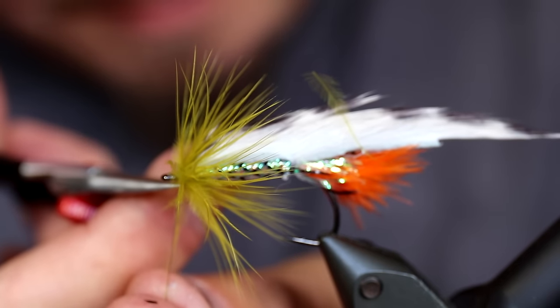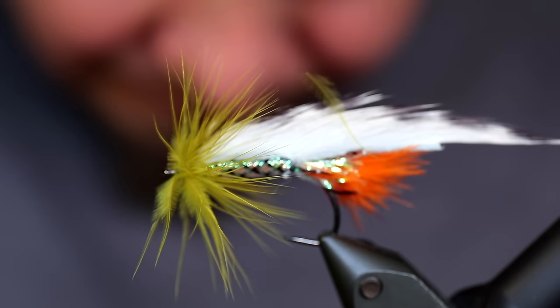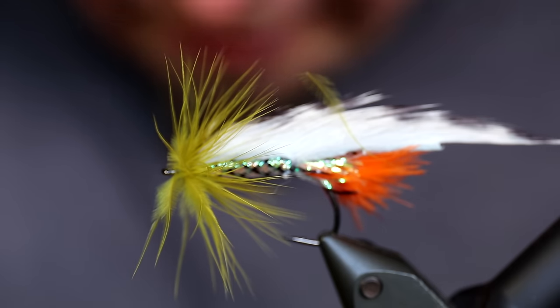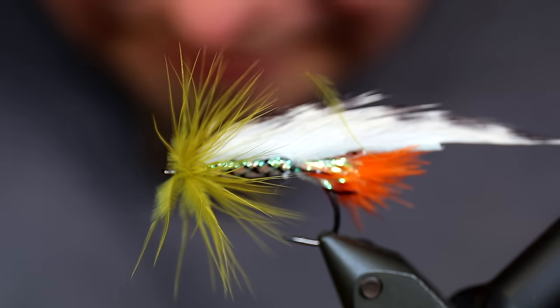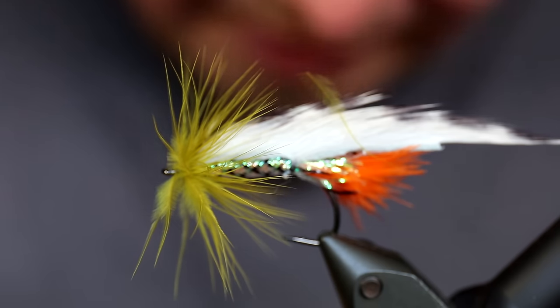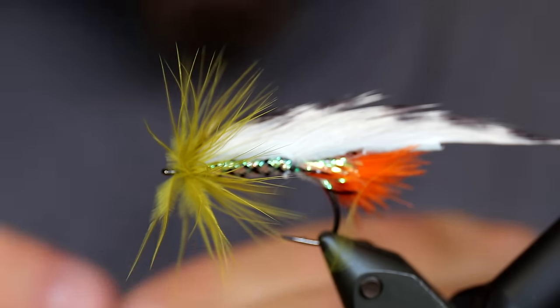Cutting that off. Like so. And then I'm going to find me a fish mask. And of course these come in all kinds of different colors, gold and stuff like that. I like this, this is the smallest size they have. This is the small one and it has a keel.